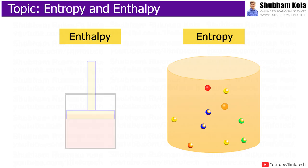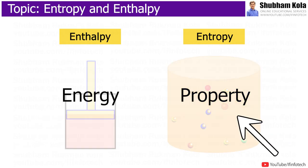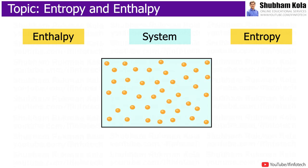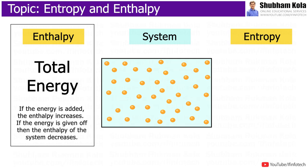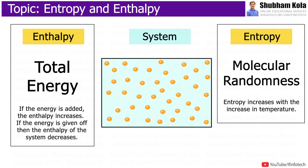Enthalpy is a kind of energy whereas entropy is a property. Consider a system that has molecules moving in random motion — these molecules have some attraction between them and so they have potential energy. These energies together make up the internal energy, which means if energy is added the enthalpy increases, and if energy is given off then the enthalpy decreases. That means enthalpy is directly related to the internal energy of the system, whereas entropy is the measurement of molecular randomness and increases with increase in temperature.